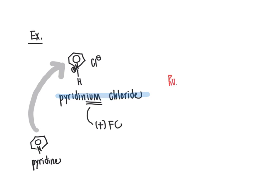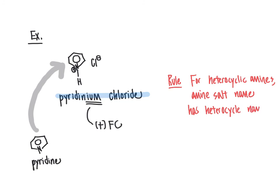The general rule here is that for these heterocycles, for the heterocyclic amines, the amine salt name will have the heterocycle name with the suffix IUM to designate that it's picked up a proton. And you'll remove the E from the end of the original amine name as well. So that's how we went from pyridine to pyridinium chloride, by taking pyridine and removing the E from that name.